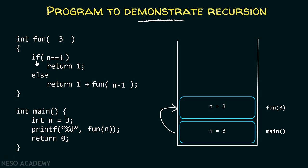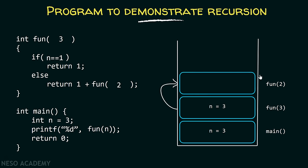Inside fun(3), the first step is to check if n equals 1. As n is 3, this condition is false, so the else part gets evaluated. In the else part we have: return 1 plus fun(n minus 1). This is clearly recursion because fun is calling itself. As n equals 3, n minus 1 is 2, so from fun(3) we are calling fun(2). The control transfers from fun(3) to fun(2), and the activation record of fun(2) is maintained above fun(3) in the stack.